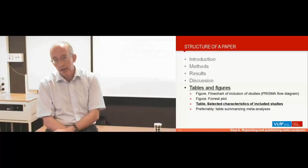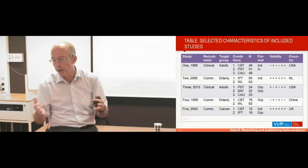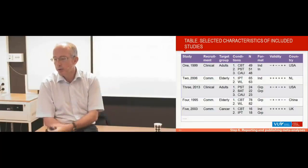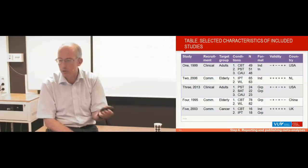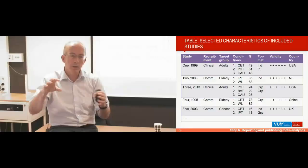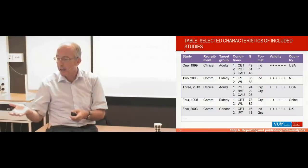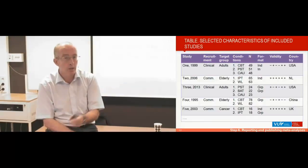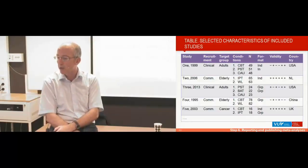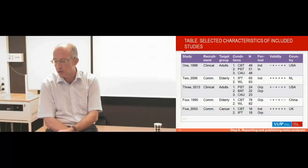What you also should give is a table with the selected characteristics of included studies. And as I said, there is no clear rule for what you should report there, what you should add to that table. But this is just, you know, an example for studies that you reported: how they were recruited, the target groups, the different conditions included in the study, the N per condition, was the treatment delivered individual or in group, you could add the number of sessions, you can add, for example, a column with the validity, with a plus or minus or question mark for the validity of each of the studies. But this is, you know, as I said, there is no strict rule for this.